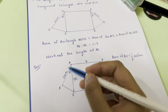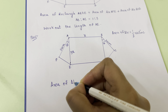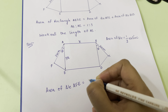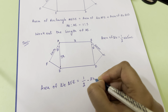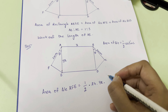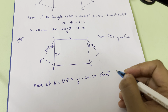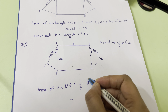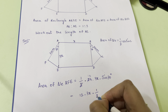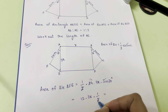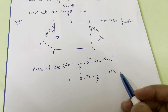Area of triangle AFE = ½ × 24 × 3x × sin(30°). Sin 30° = ½, so this gives ½ × 24 × 3x × ½ = 12 × 3x × ½ = 18x. So the area of triangle AFE equals 18x.